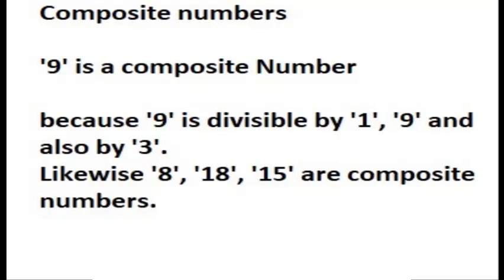But whereas 9 is not a prime number, 9 is divisible by 1 and also it is divisible by 9. It is also divisible by 3. So any number which is divisible by other than a number apart from 1 and itself is called a composite number. So 9 is a composite number, 8, 18, 16, 15, etc. are all composite numbers.